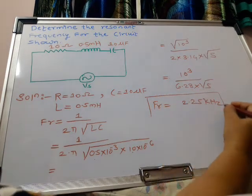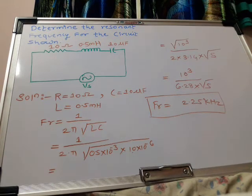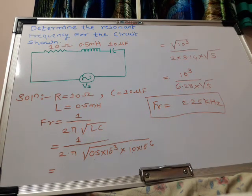We can highlight this: frequency Fr equals 2.25 kilohertz. In this way we can solve simple numerical problems based on series resonance frequency formulas.